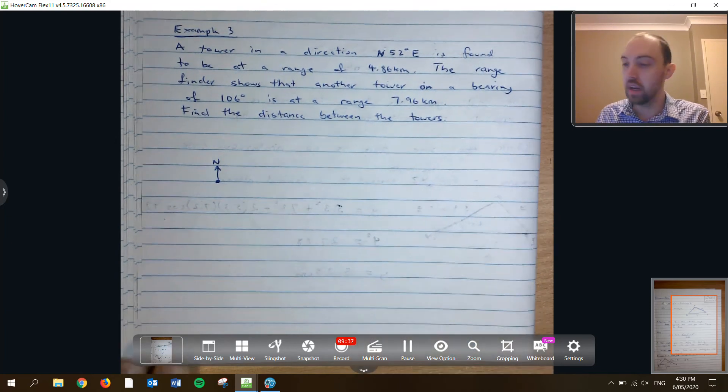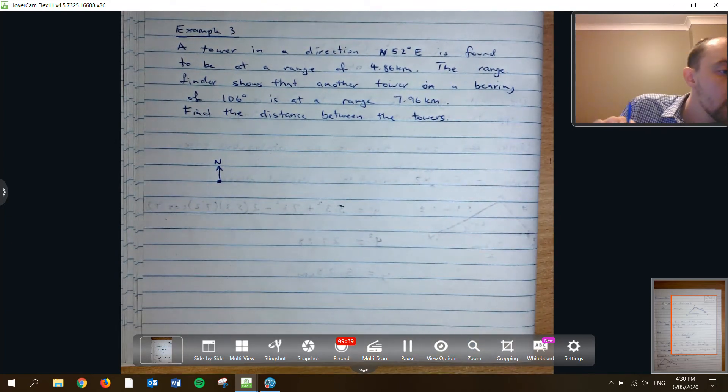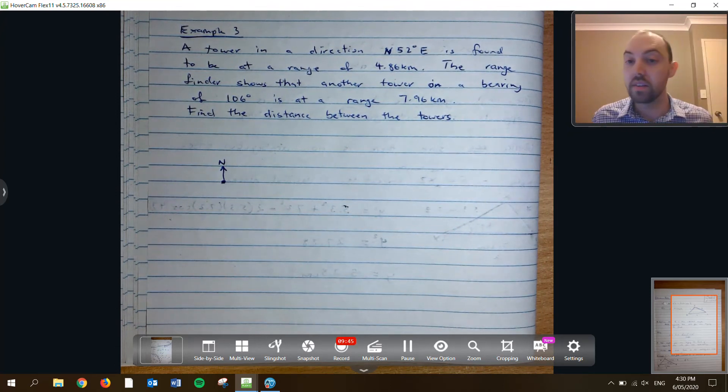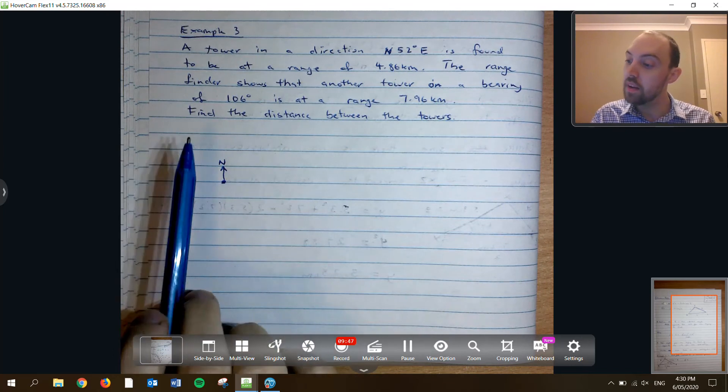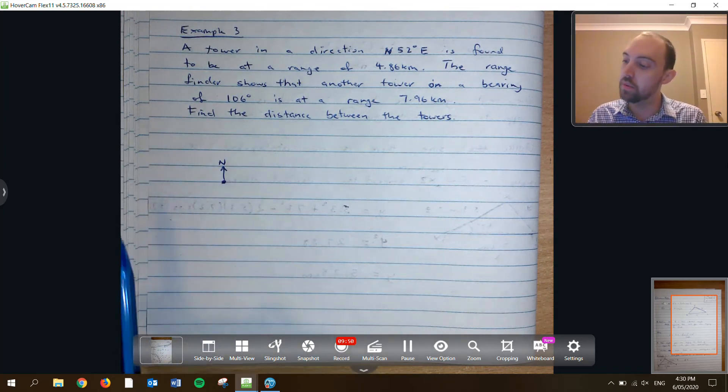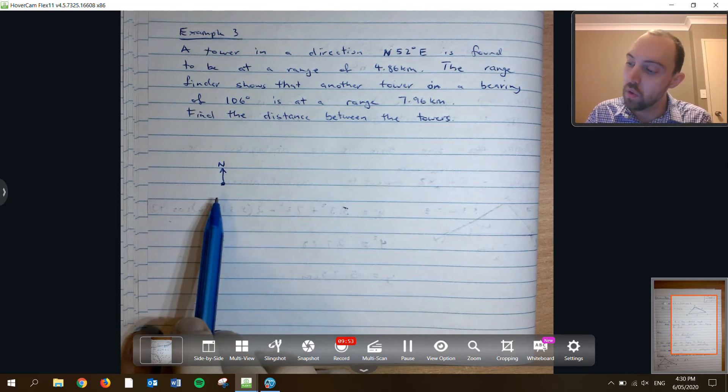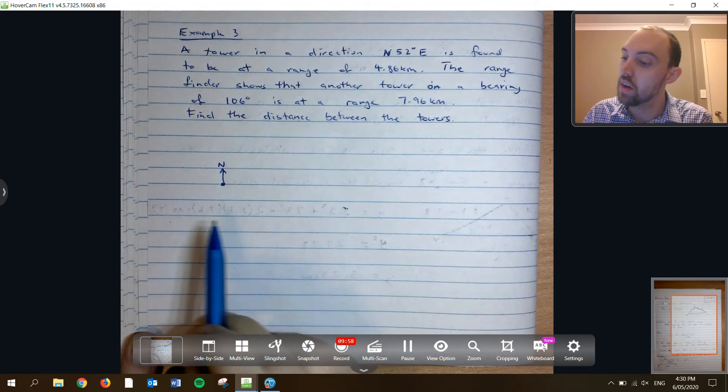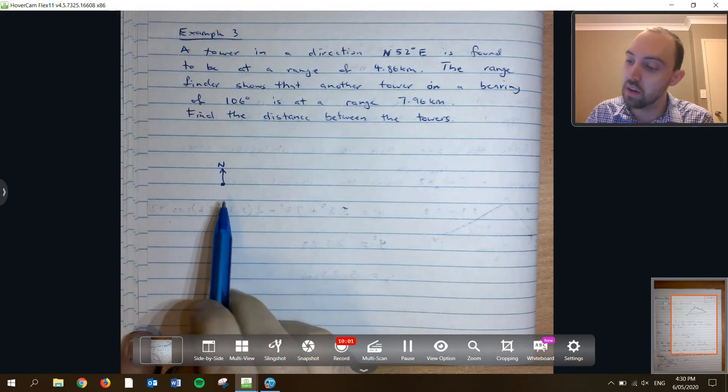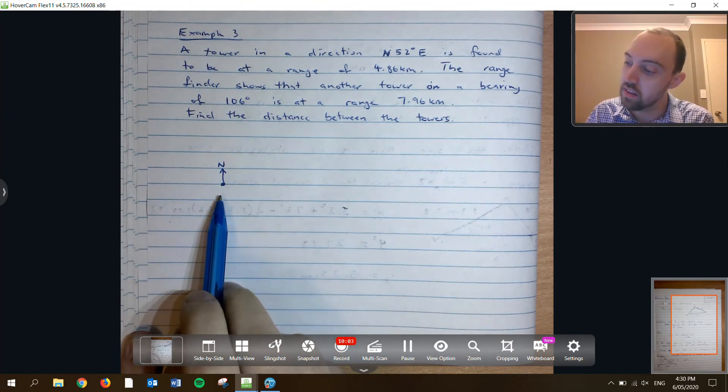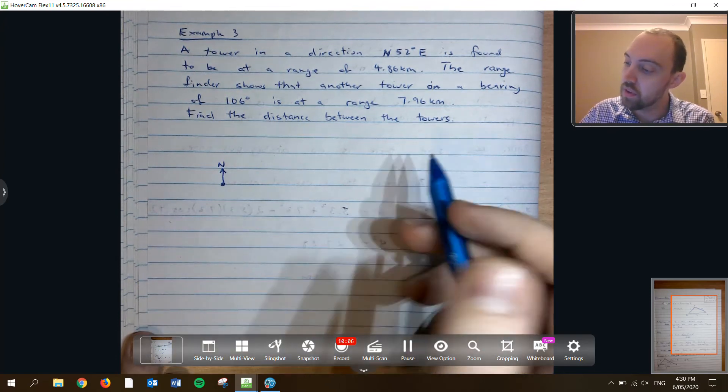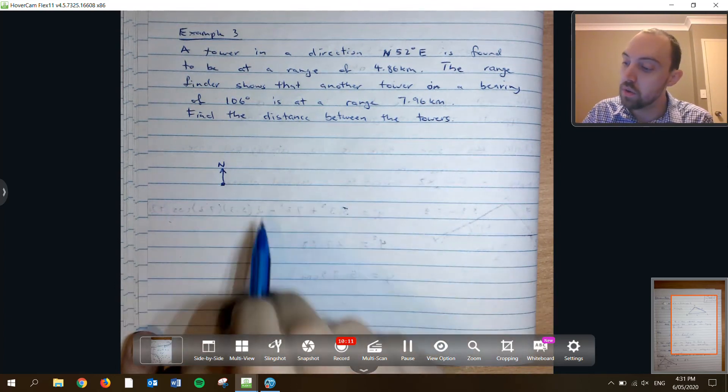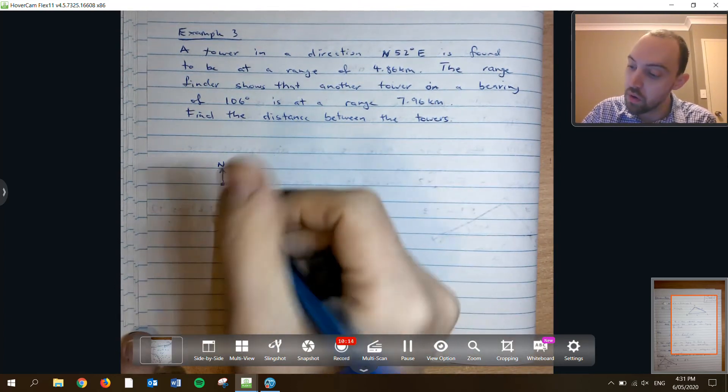Lastly, we have a compass bearing problem. I'm going to sketch this. We have a tower in the direction north 52 degrees east is found to be at a range of 4.86 kilometers. The range finder shows that another tower bearing of 106 degrees is at a range of 7.96 kilometers. Find the distance between the two towers.